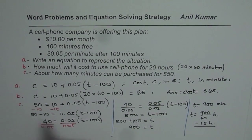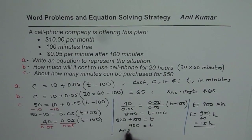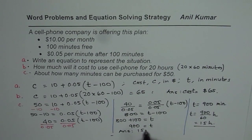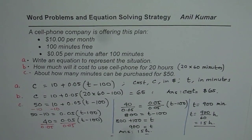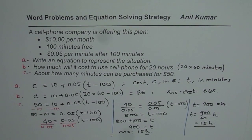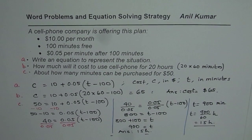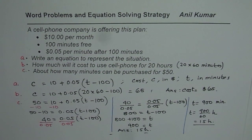So for part C, the answer will be 15 hours. So for $50, we could use this facility for 15 hours. I hope that helps. Thank you and all the best.